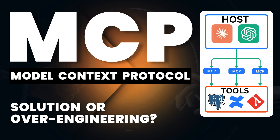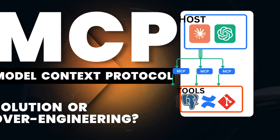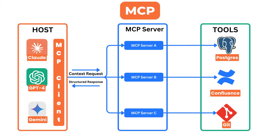Today we are diving into Model Context Protocol, or MCP. It's a new standard being talked about as a revolutionary way for AI systems to fetch context from different sources. It's being called the USB-C of AI — a universal connector that lets AI systems plug into GitHub, databases, internal tools, and pull relevant context on demand.